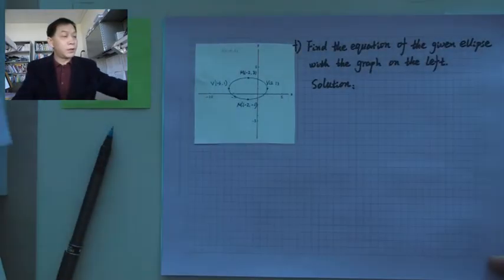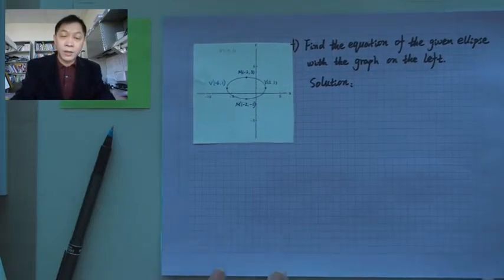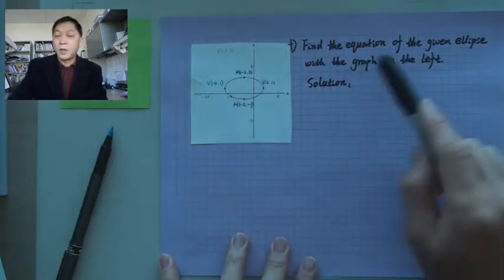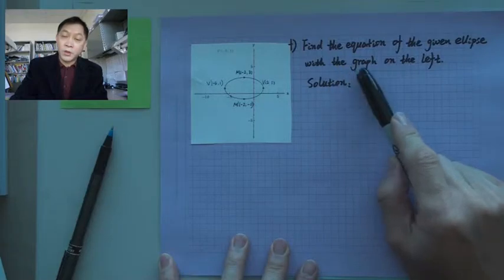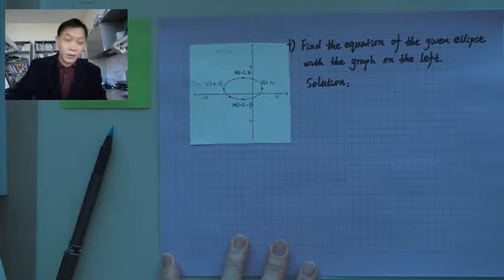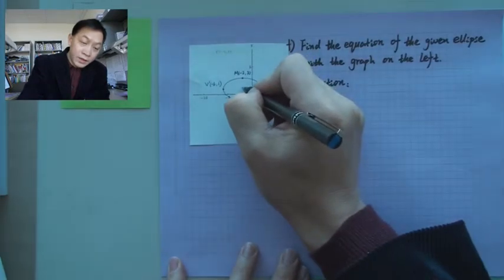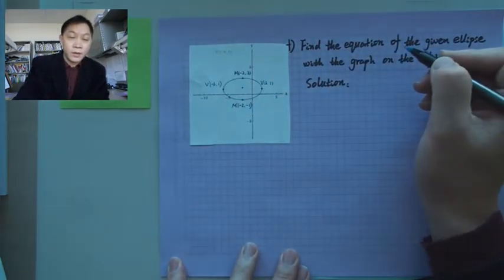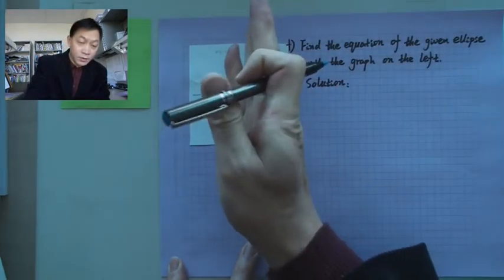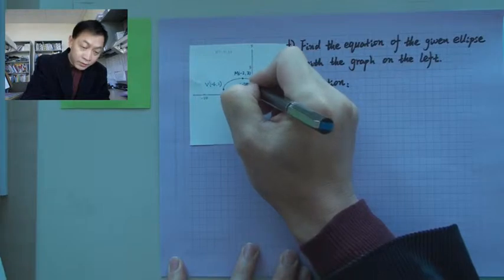Now let's look at another example. This example says: find the equation from the picture of the given ellipse with the graph on the left. In this case, we need to work a little bit more. We've got to find our center first. The center for x — this is x — is negative 2. So you put negative 2 here.